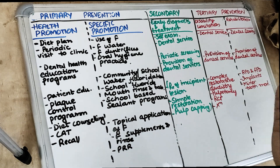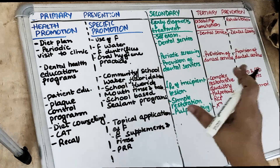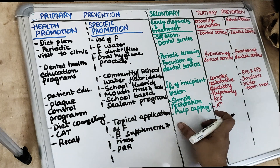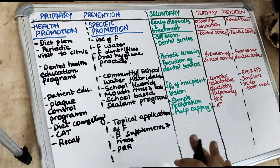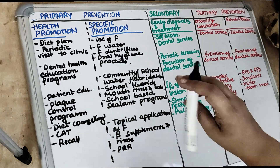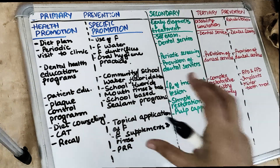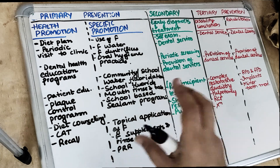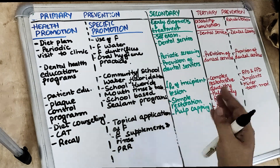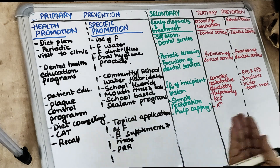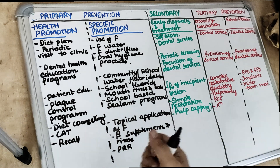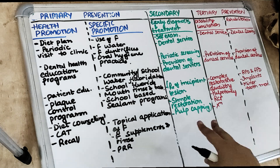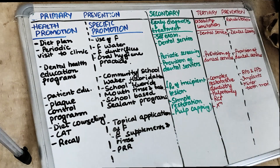Secondary means caries has started — there is caries present in the patient's mouth. Now we want to arrest the caries at its initial rate, its initial spread. We don't want caries to destroy the whole tooth. So we remove the caries and provide a preventive resin restoration. We remove the caries with a spoon excavator and put GIC. So initial caries with a simple restoration — you can put GIC.